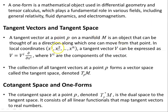In local coordinates x¹, x², ... xⁿ, a tangent vector V can be expressed as V = Vⁱ ∂/∂xⁱ, where Vⁱ are the components of the vector and ∂/∂xⁱ are the basis vectors in the local coordinate system.